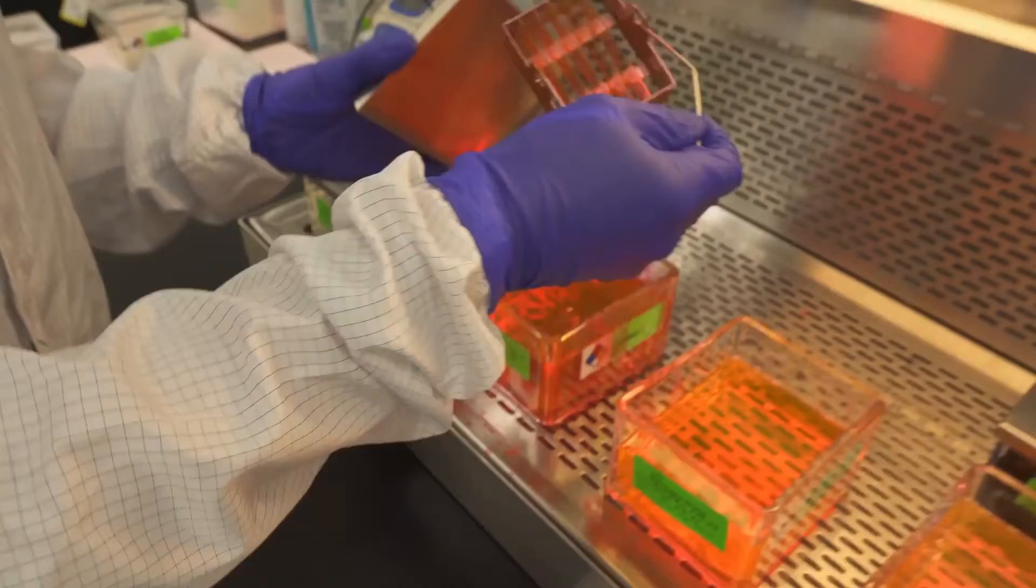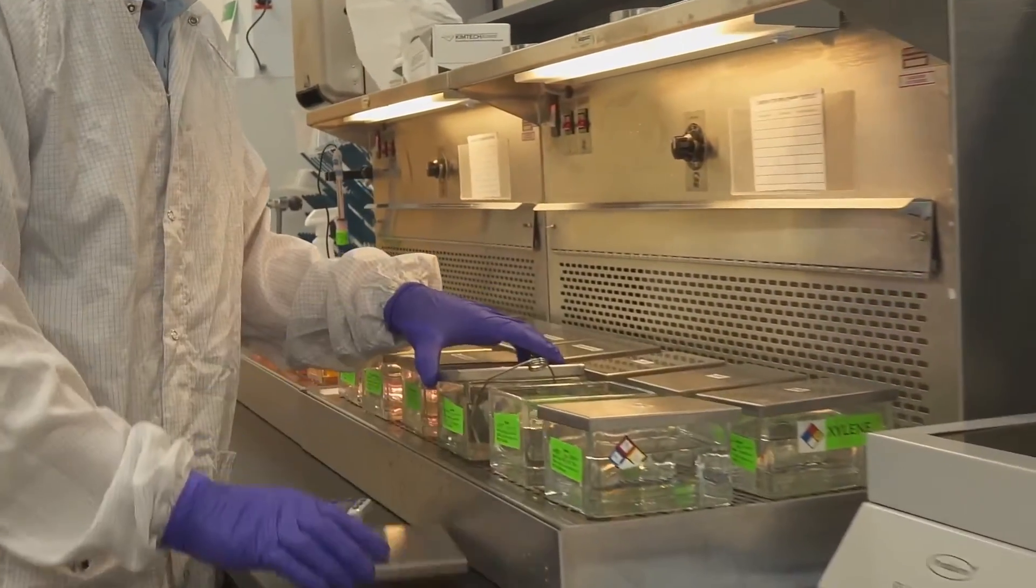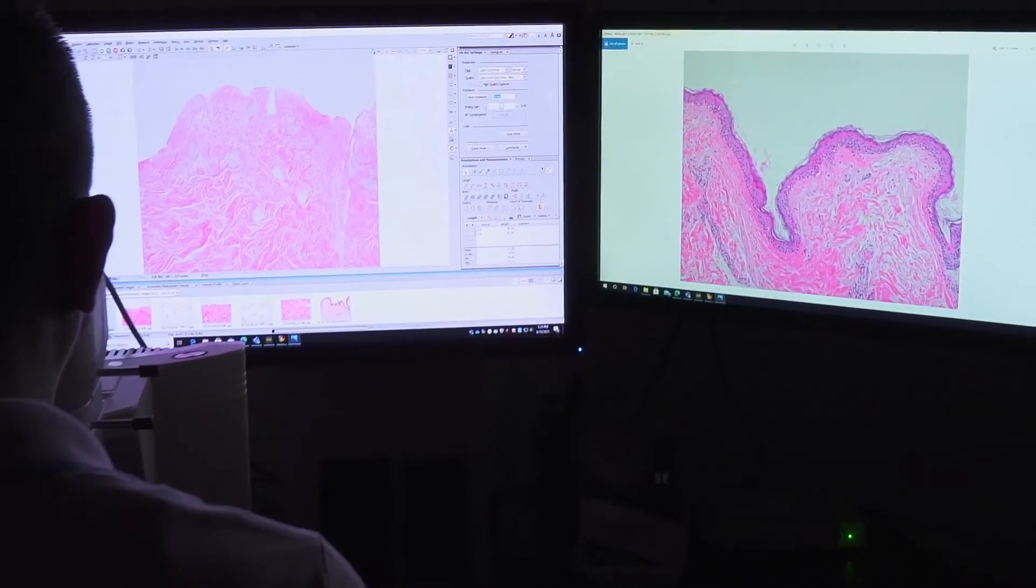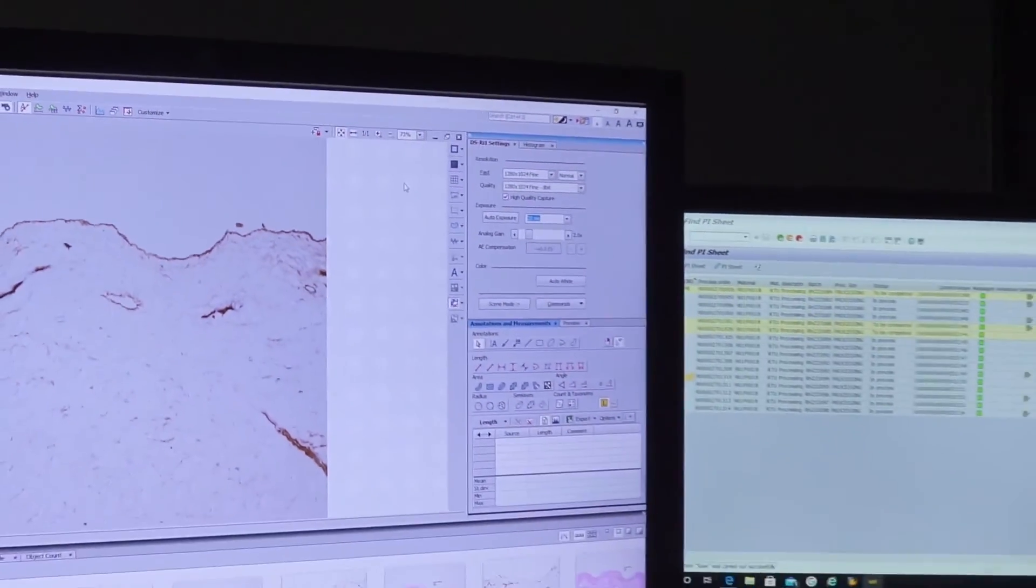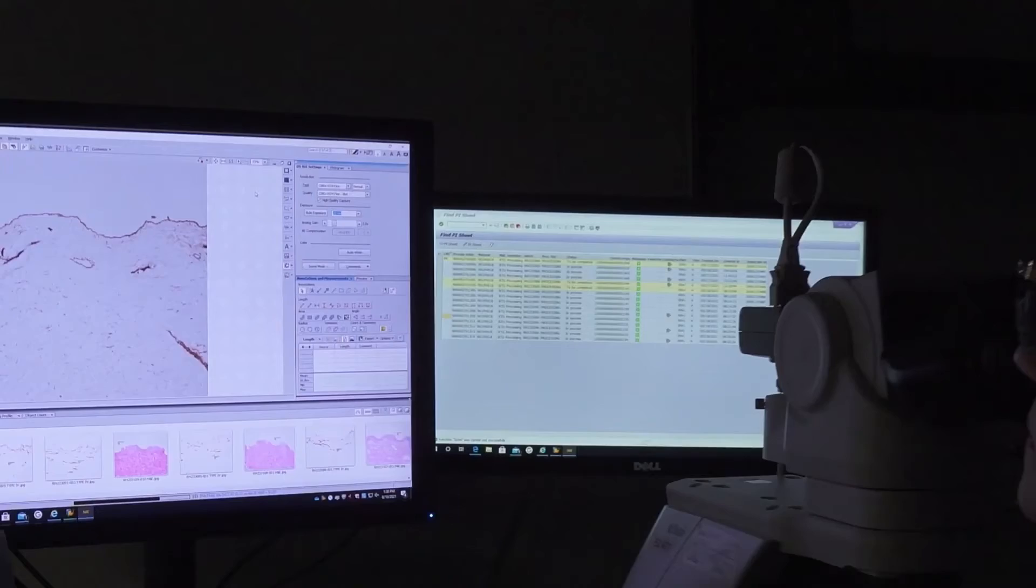We use H&E and immunohistochemistry staining to ensure successful removal of epidermis, intact basement membrane, successful removal of cells, and preserved structural integrity, among other things. No tissue leaves the plant if it does not pass these criteria.